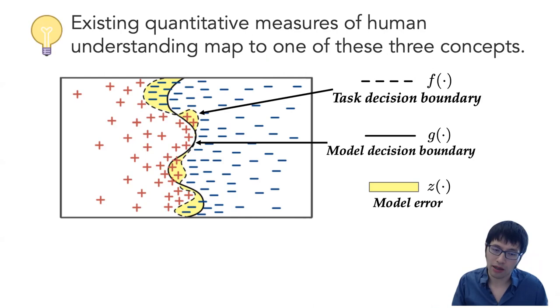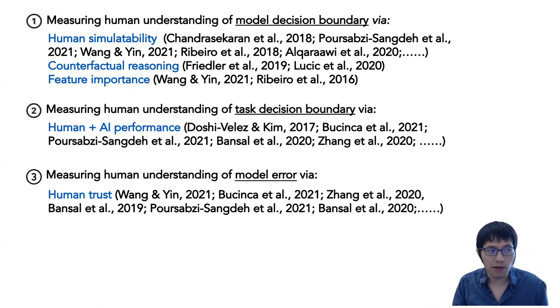The first key insight of this work is that existing quantitative measures of human understanding can all be mapped to one of these three concepts. For instance, human simulability essentially measures whether humans are able to simulate the model predictions, which is measuring human understanding of the model decision boundary. Human plus AI performance measures human understanding of the task decision boundary. Finally, the notion of trust is closely connected with model error.